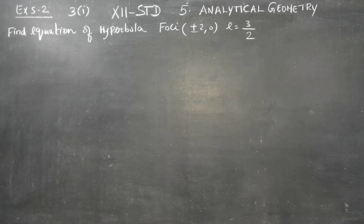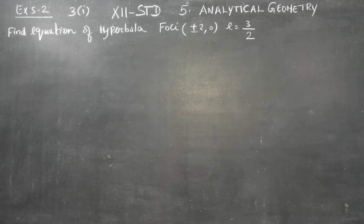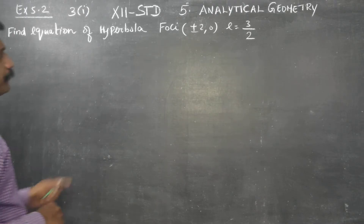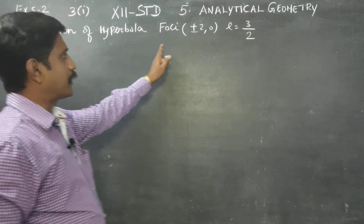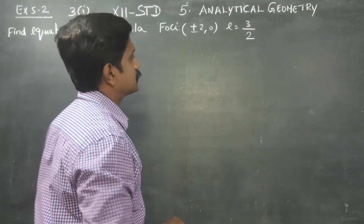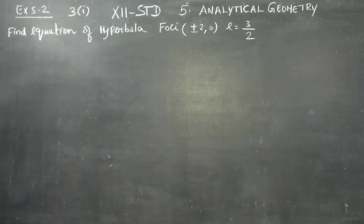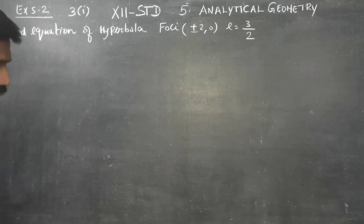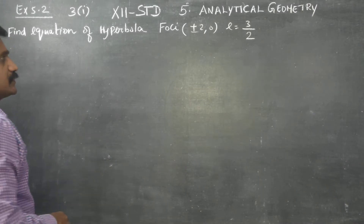Dear 12th standard students, in exercise no. 5.2, sum no. 3, find the equation of the hyperbola with foci at (2,0) and (-2,0), and eccentricity is 3 by 2.